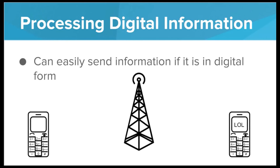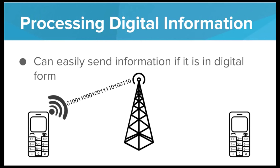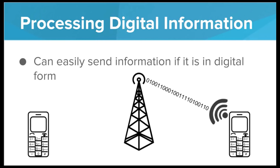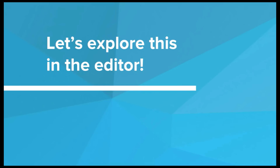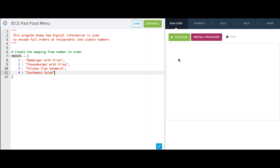Being able to break down information into numeric form is a very powerful tool that is a huge part of computer science, and that's what we'll be exploring in this unit. Let's see this in the editor. In this program, we'll see an example of encoding information as numerical digits.